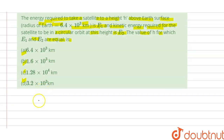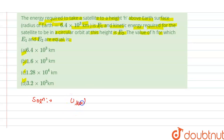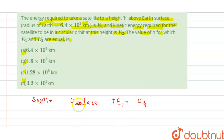We have to find which option is correct. The solution: we have kinetic energies E1 and E2. We can write: energy at surface plus E1 is equal to energy at height h. Kinetic energy is zero at Earth's surface and at height h.